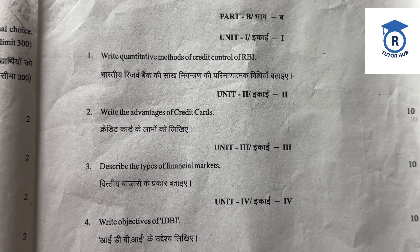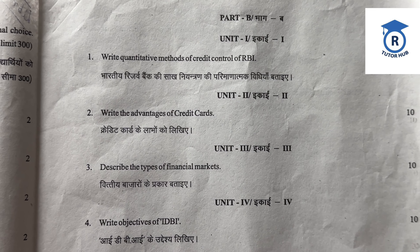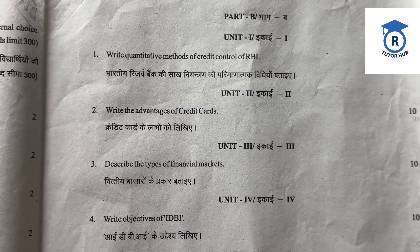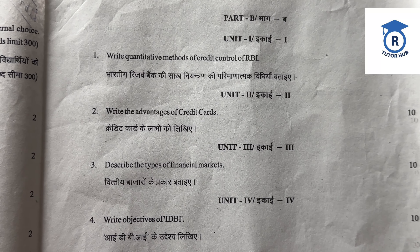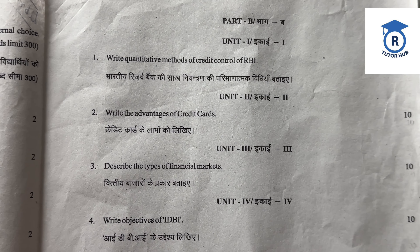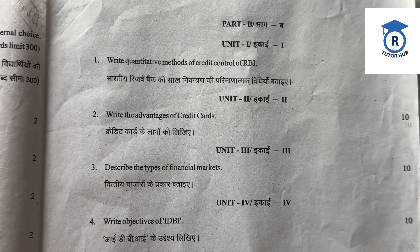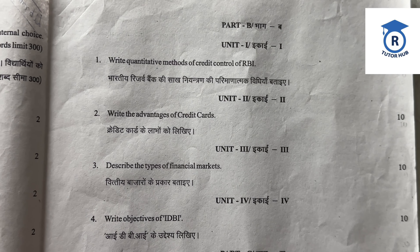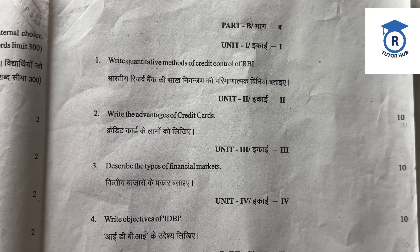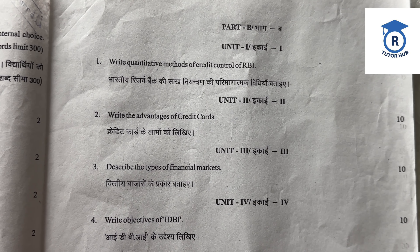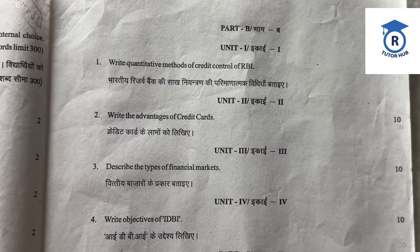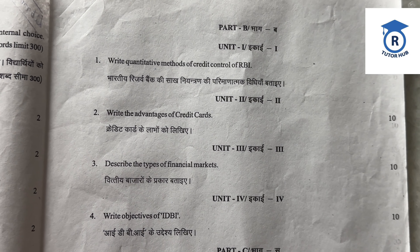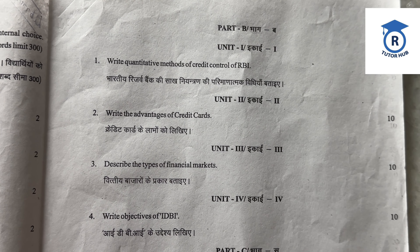Now Part B — 4 short answer questions, attempt any 2. Unit 1: Write quantitative methods of credit control of RBI — Bharatiya Reserve Bank ki sakh niyantran ki parimaanatmak vidhiyan bataiye. 10 marks. Unit 2: Write the advantages of credit cards — credit card ke labh likhiye. 10 marks. Unit 3: Describe the types of financial markets — vittiya bazaron ke prakar bataiye. Unit 4: Write objectives of IDBI — IDBI ke uddeshya likhiye. 10 marks each, attempt any 2.